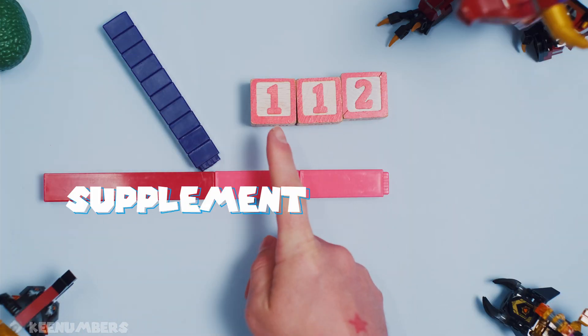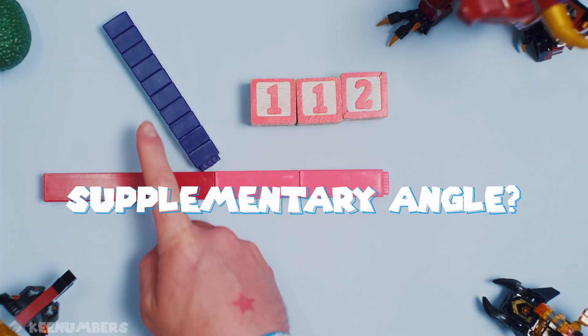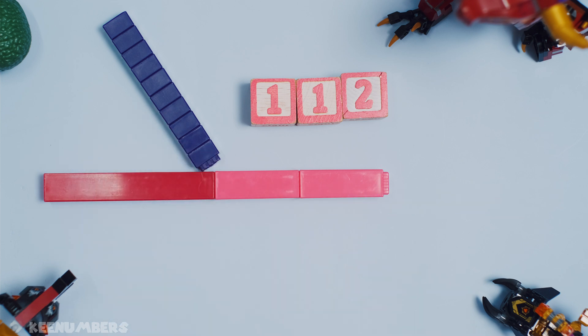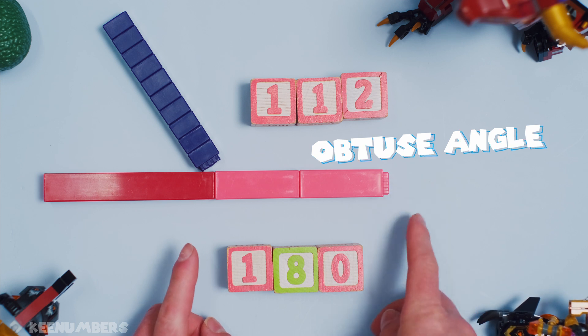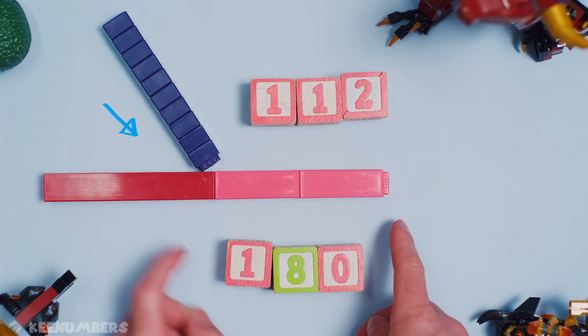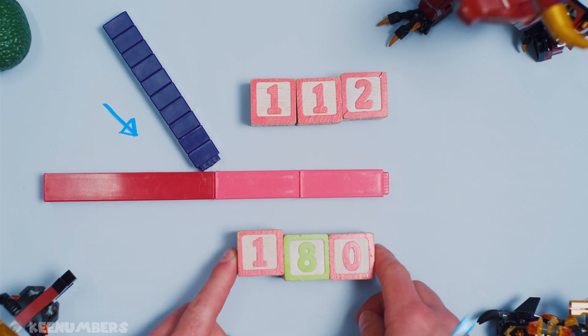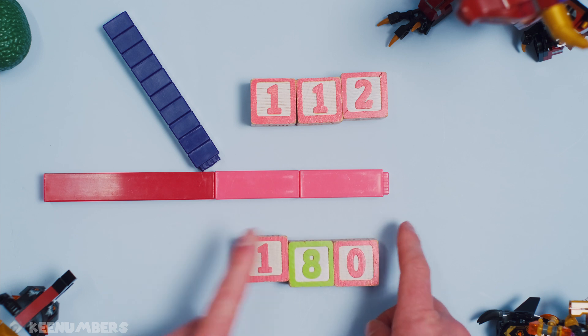What is the supplementary angle of 112 degrees? In other words, that guy. We need to know when you add a number to 112, the supplementary angle, whatever that is, it's got to give you 180 degrees.